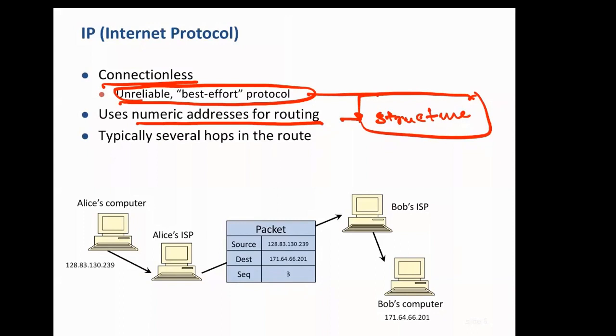Routing typically takes several hops, as we've seen, and IP packets have source ID, destination ID, and other fields.